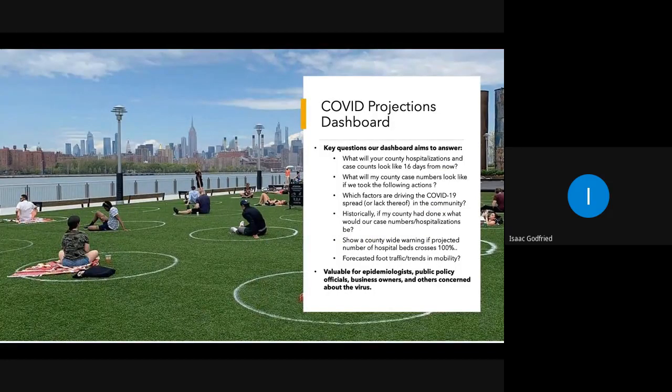In terms of what this will actually look like in practice, we plan to have an online web app dashboard that would answer the following questions: What will our county's hospitalizations and case counts look like 16 days from now? Also, we're looking to do basically these types of causal inference — if my county took this action and implemented this policy, how would that affect the projections and case numbers?